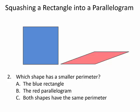The second question: which shape do you think has a smaller perimeter? The answer is, both shapes have the same perimeter.